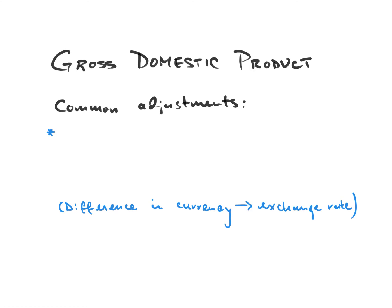Per capita — that's Latin for literally per head, or per person. A very common adjustment when discussing GDP of two countries or tracking a country's GDP over time is to express it as GDP per capita, which simply means divided by the size of the population. Another concern when comparing two countries is the cost of living, which is simply different between the United States and Mexico — most things are less expensive in Mexico.